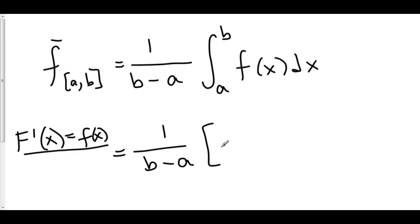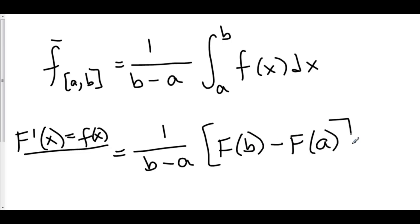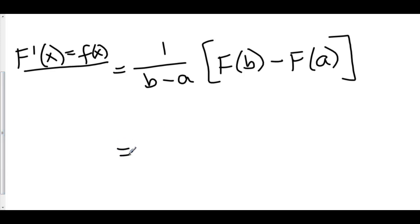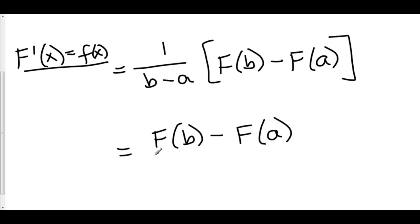So by FTOC Part 2, here we have big F of b minus big F of a. Now I'm going to rewrite one over b minus a times F of b minus F of a as F of b minus F of a over b minus a.